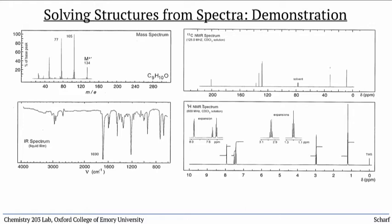I'd like to demonstrate how I go about solving structural problems based on spectroscopic and spectrometric data. Now that we have four different types of spectra that we know how to interpret, let's systematically work through them to determine the structure of an unknown compound.